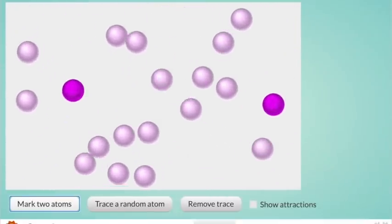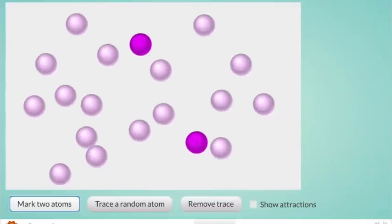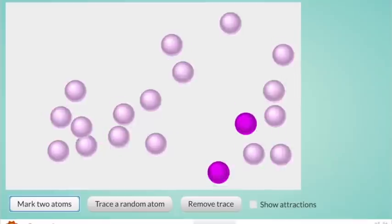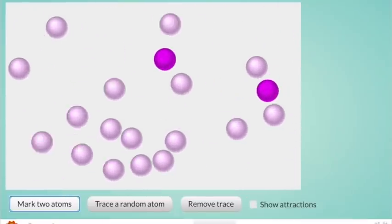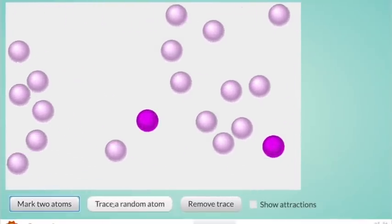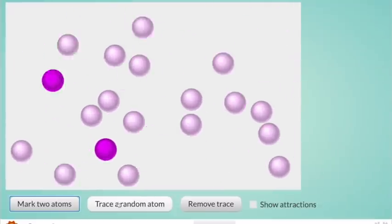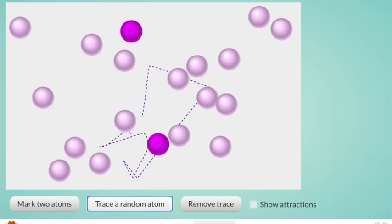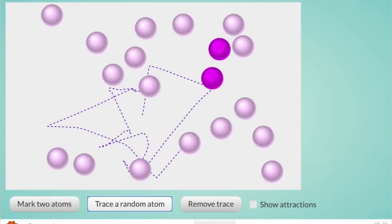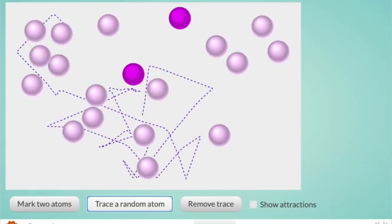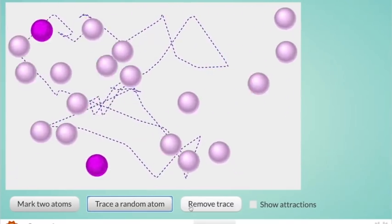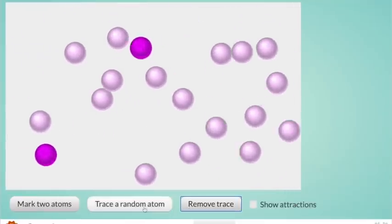What happens when one particle collides with another particle? Where are these particles going anyway? Let's trace a random particle to see what happens. Whoa. Let's remove that trace and try it again.